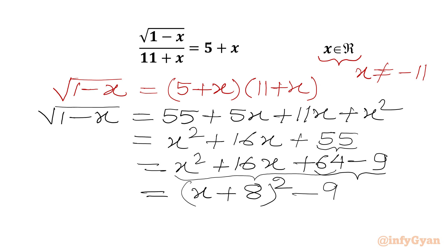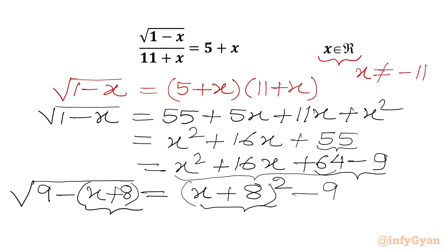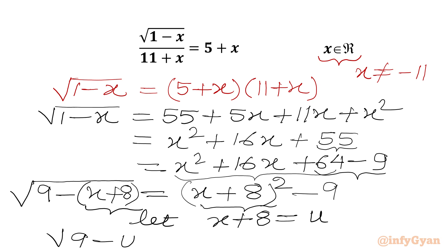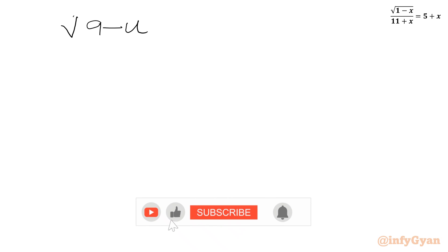And then we have minus 9. Now we have (x plus 8) in the RHS, so let's write it in the LHS also. I will write 9 minus (x plus 8), and simplifying 9 minus x minus 8 gives us 1 minus x. Now we have (x plus 8) in both LHS and RHS. Let us say x plus 8 equals u, so our equation becomes square root of (9 minus u) equal to u squared minus 9.